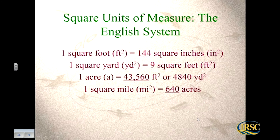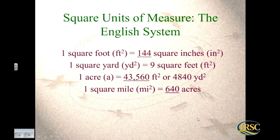In the English system, one square foot equals 144 square inches, and one square yard equals 9 square feet. One acre — which is a measurement of area, notice it doesn't have 'square' on it — equals 43,560 square feet or 4,840 square yards. One square mile equals 640 acres. By the way, when looking at English-to-metric conversions, those are all approximations that have been rounded at some point.